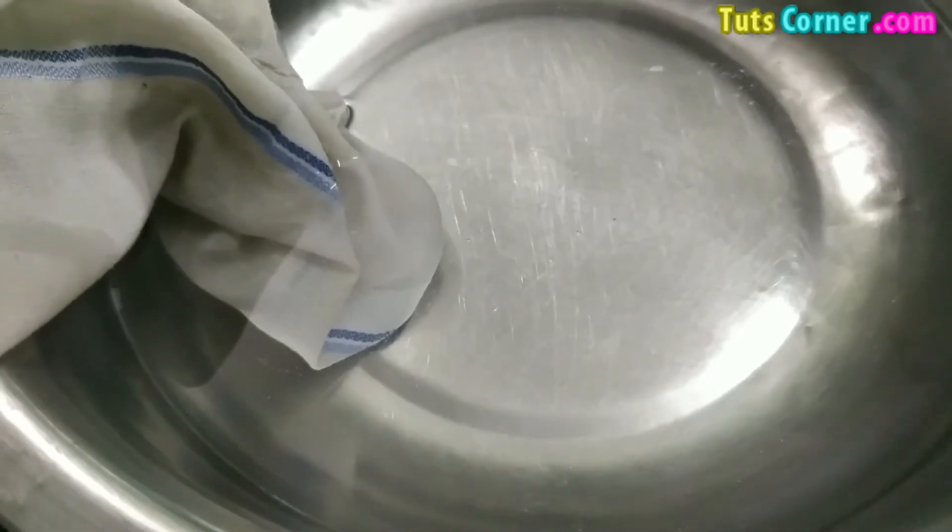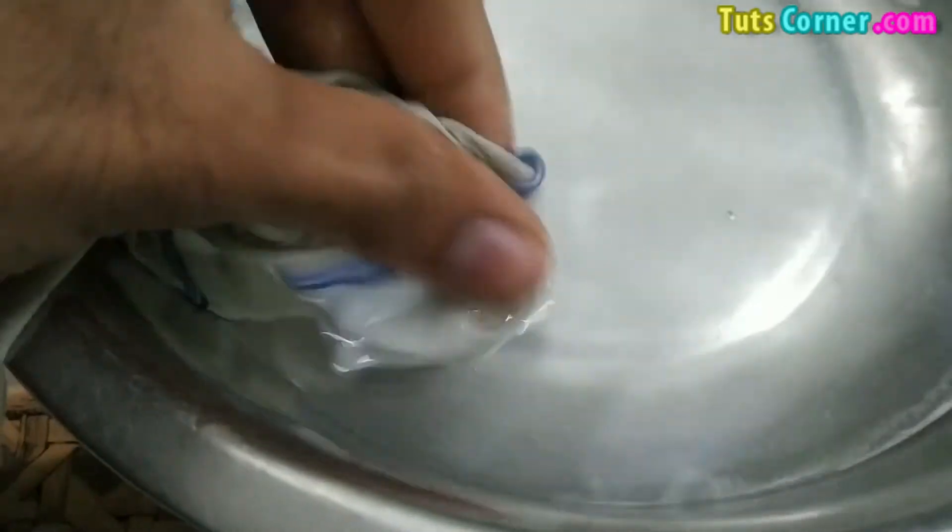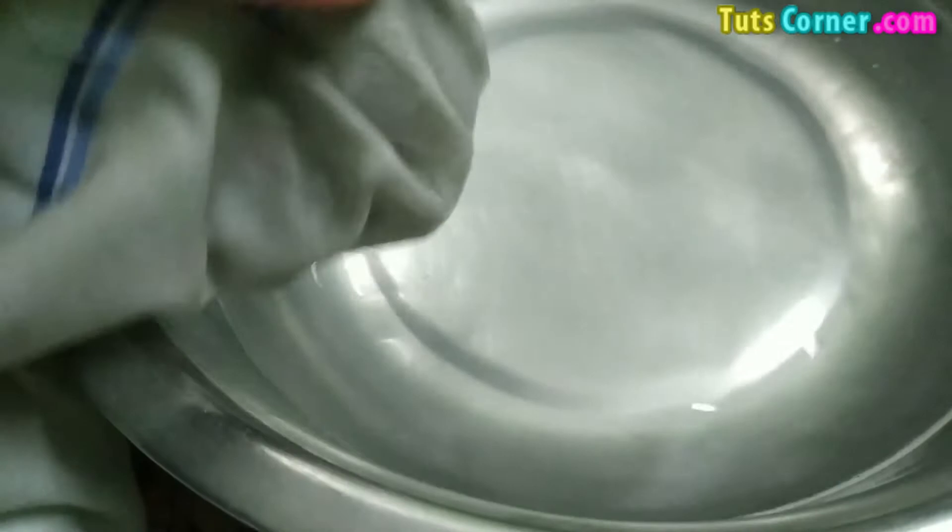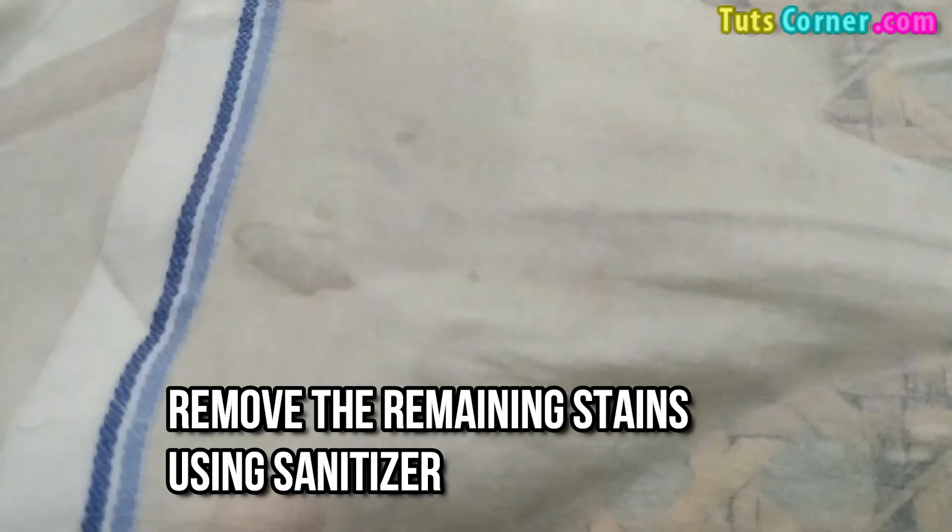You can rub it in between, and then after 45 minutes you can remove it from the water. Now the stain has been 50% removed. The remaining will be removed by using the second step.